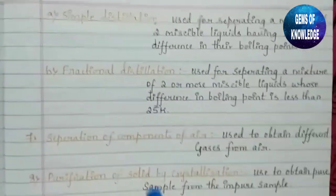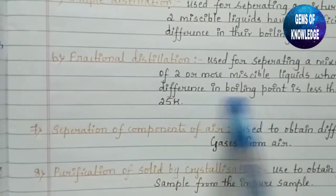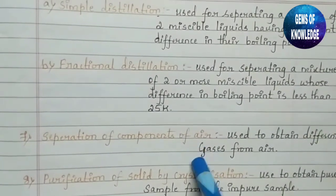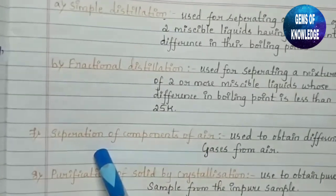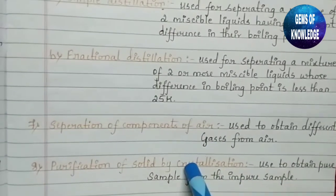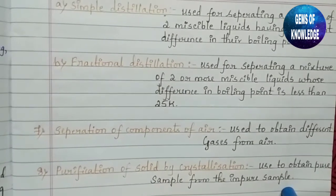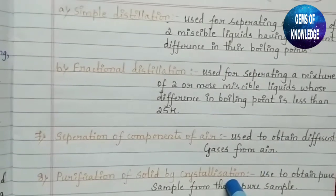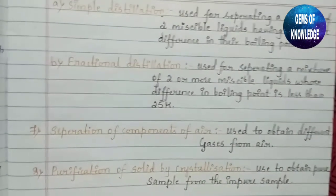The seventh technique is separation of components of air. Even the components of air can be separated — this is used to obtain different gases from the air. The last technique is purification of a solid by the crystallization process, used to obtain a pure sample from an impure sample by taking out the pure component.